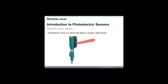Definition of a photoelectric sensor: a device that detects a change in light intensity. Typically, this means either non-detection or detection of the sensor's light source. The type of light and method by which the target is detected varies depending upon the sensor.